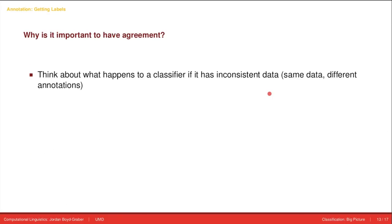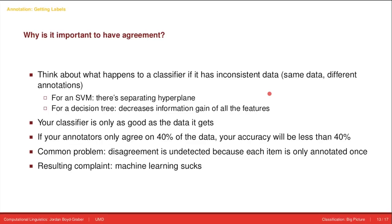Let's go back to why it's important to have agreement. Think about what happens when a classifier has inconsistent data. This is perhaps most obvious for a support vector machine. If you have the same data with different annotations, there's no separating hyperplane. You have the same point with the same label, and so there's no way to build a margin between those two data points.